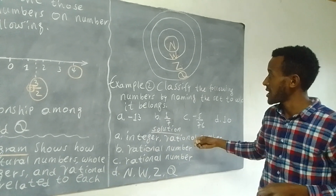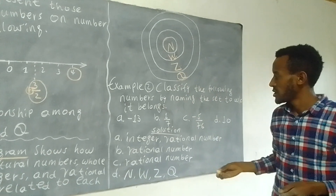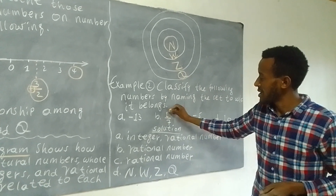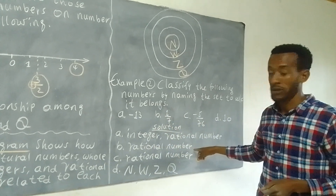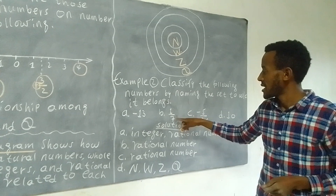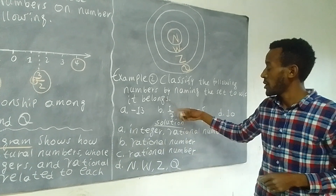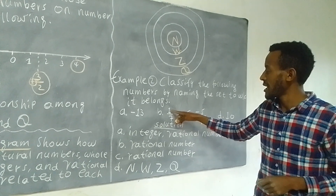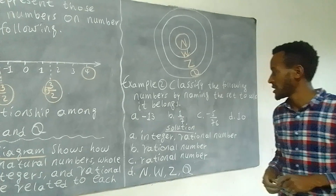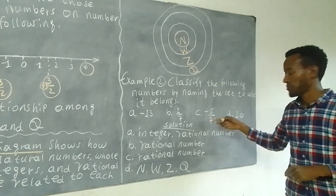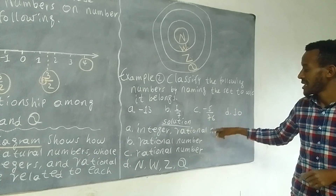Solution: A, negative 13 belongs to rational number and integer. B, 1 over 7: rational number represents the form A over B, so 1 over 7 is a rational number. C, negative 5 over 76 is a rational number.